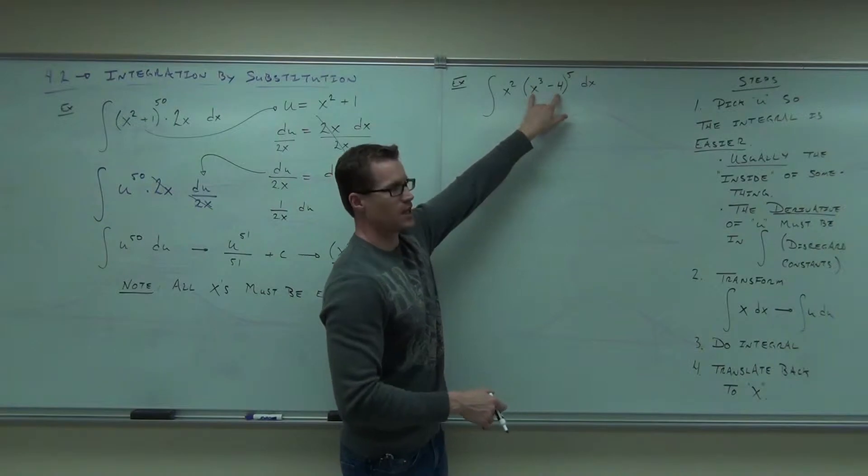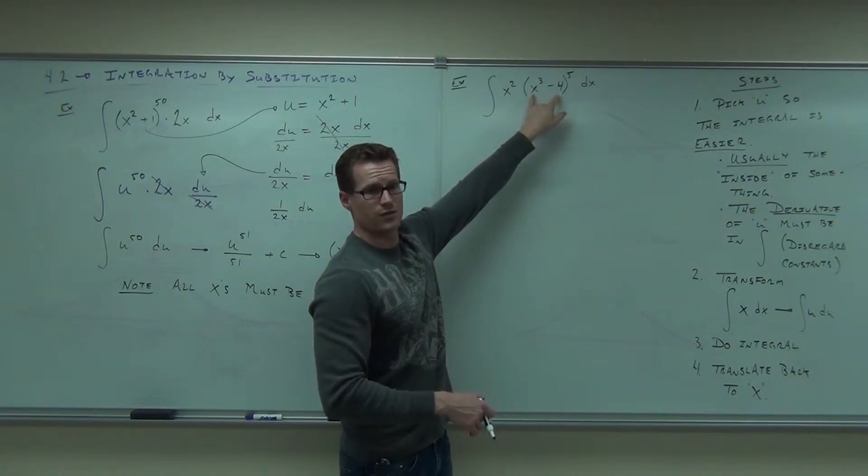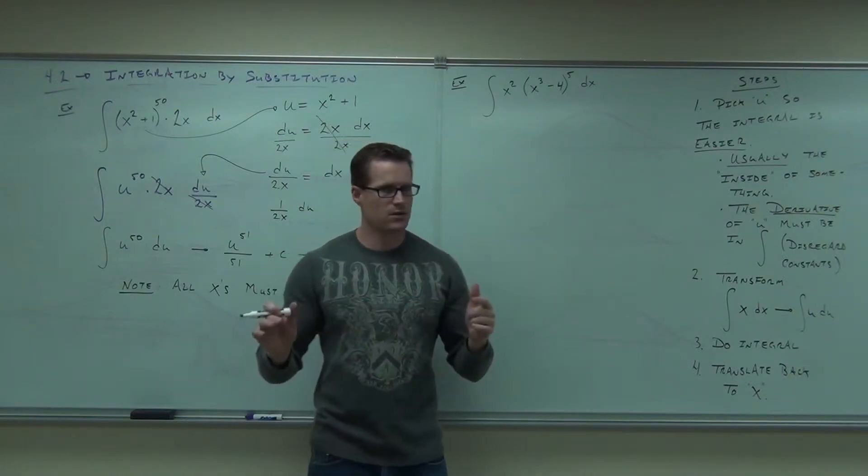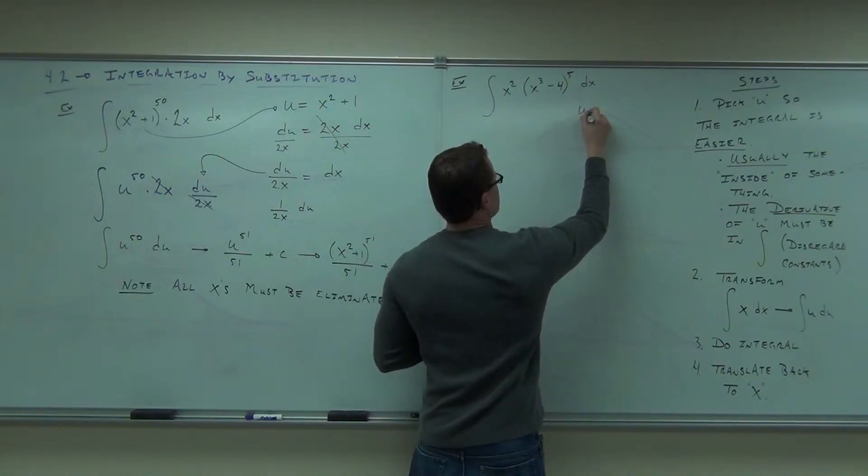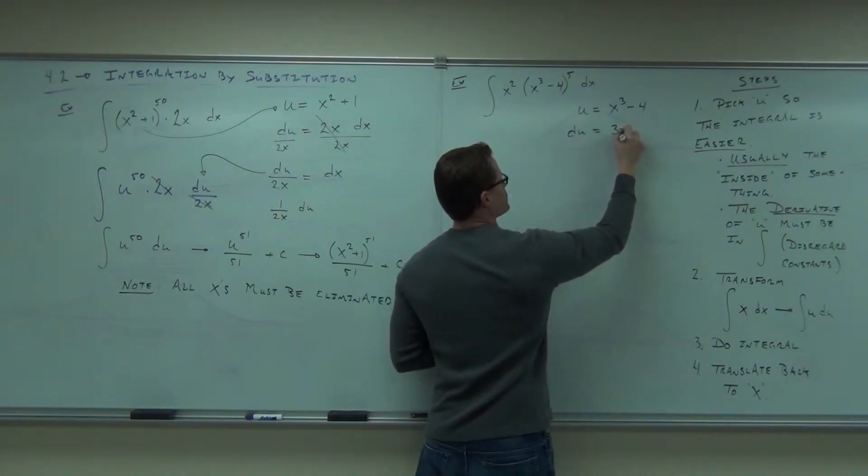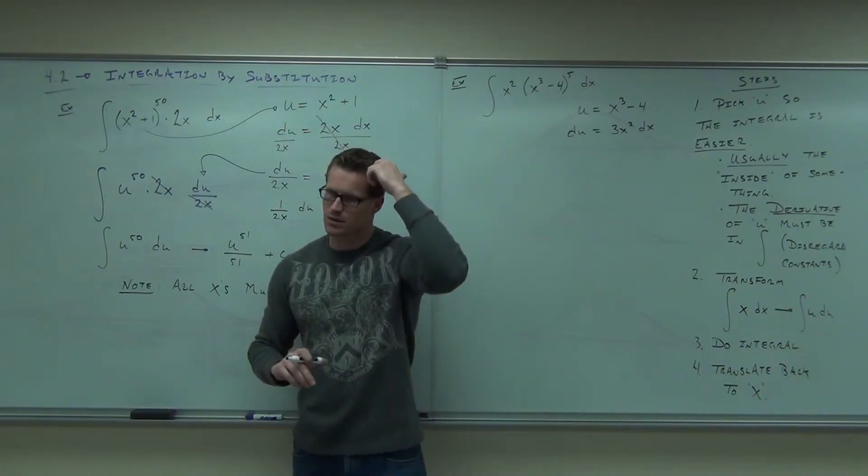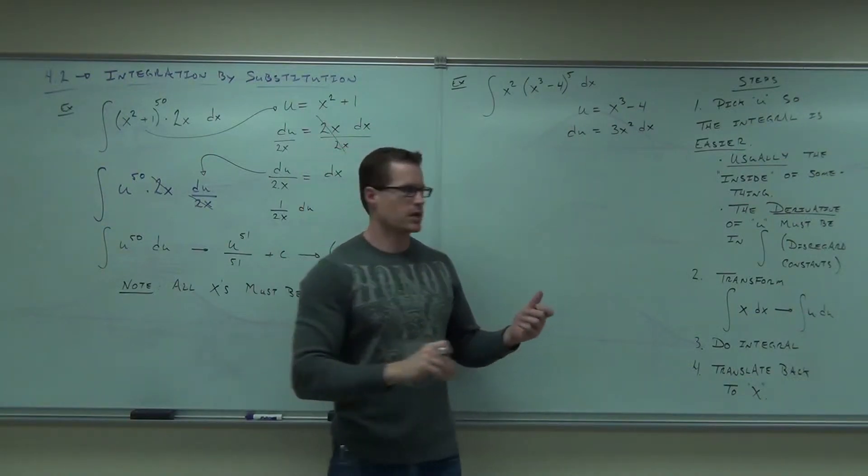Also, do you notice that the derivative of this is in your integral? What's the derivative of this? No, the derivative is not 2x. The derivative of this is what? 3x squared. Ignore the 3 and say it again. Right there. You don't care about the 3, but the x squared has to be there. So u equals x cubed minus 4. Du equals 3x squared dx. I want you to solve for dx. Solve for dx. How do you solve for dx here? Divide. Divide by what? 3x squared.